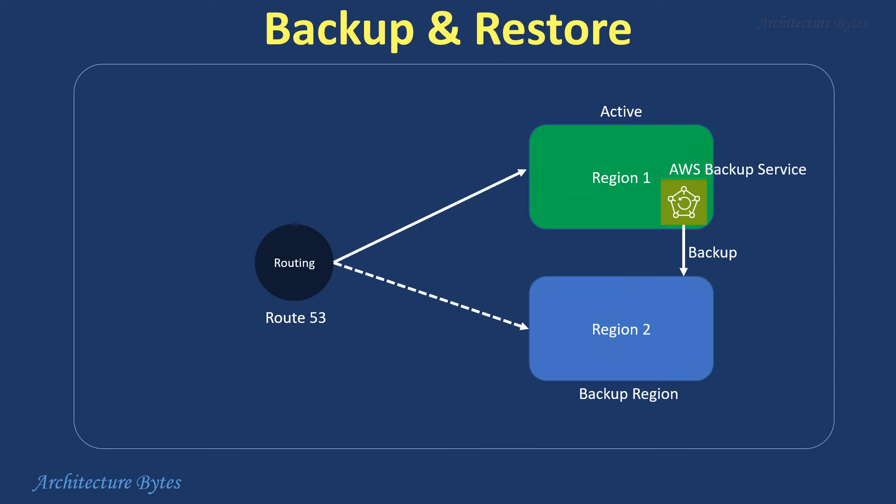Backup and restore: regularly back up your data and configurations using AWS services like Amazon S3 and Amazon EBS snapshots. You could use the AWS Backup service for this. Ensure that backups are stored in a different region from your primary deployment.